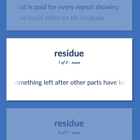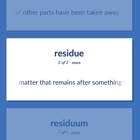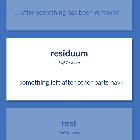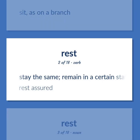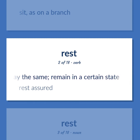Residue: something left after other parts have been taken away. Matter that remains after something has been removed. Rest: sit as on a branch. Stay the same; remain in a certain state. Rest assured.